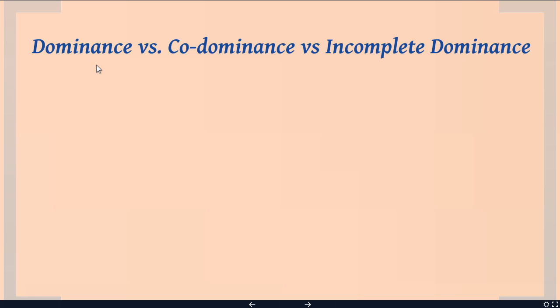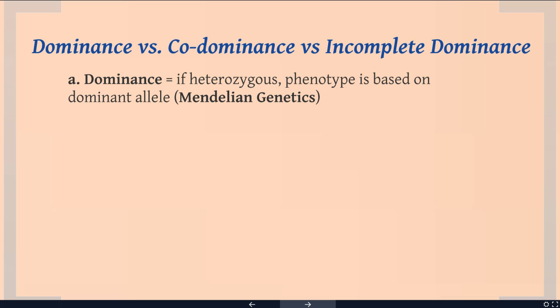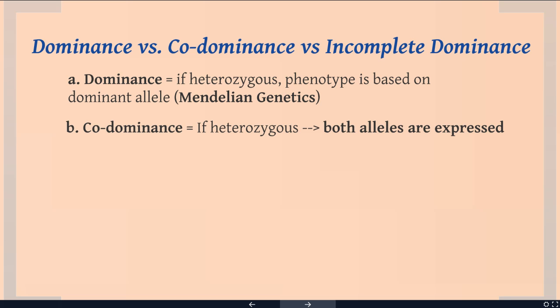So far we've been talking about dominance and recessive relationships. This is when an individual is heterozygous and the phenotype is based on the dominant allele — Mendelian genetics. An alternative to that is co-dominance, which means if an individual is heterozygous, both alleles are expressed. So instead of just the dominant allele in the phenotype, you're going to see both alleles expressed.